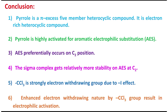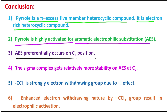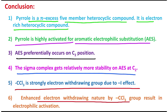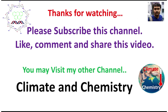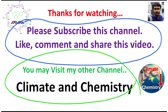In conclusion, what you have learned today: pyrrole is a pi-excess five-membered heterocyclic compound and is electron-rich. It is highly activated for aromatic electrophilic substitution, and AES preferentially occurs at C2 because the intermediate sigma complex has more resonance stabilization due to delocalization. The CCl₃ strongly electron-withdrawing group, due to the minus-I effect of three halogens on the carbon, enhances electrophilic activation on the carbonyl carbon, enabling nucleophilic attack to produce an ester and chloroform. Thank you.